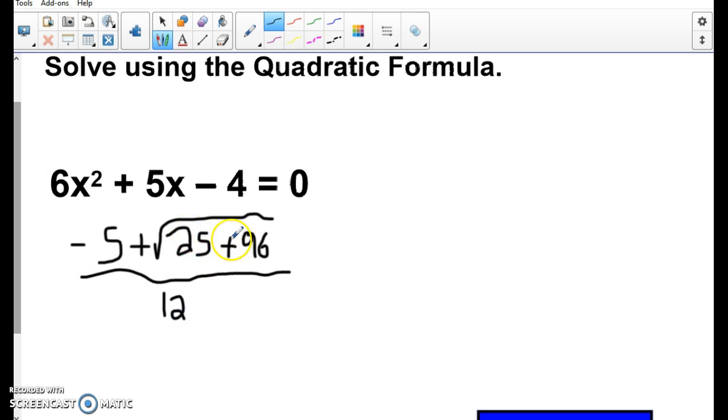Okay, and if I add these up, I get square root of 121, which is going to end up being 11. So I have negative 5 plus 11 over 12. So negative 5 plus 11 is 6. 6 over 12 is 1 half. So one of my answers that if I plug 1 half in for x would make this 0.